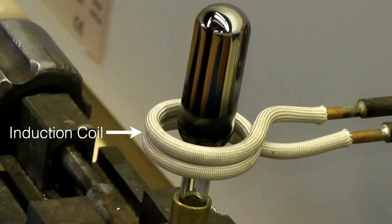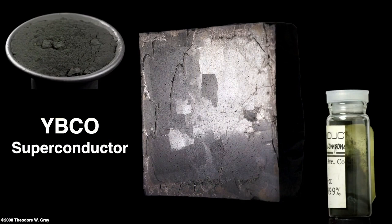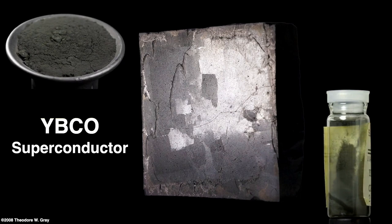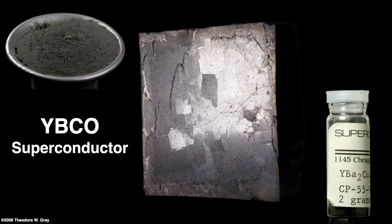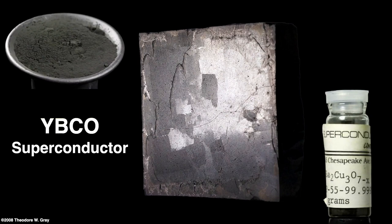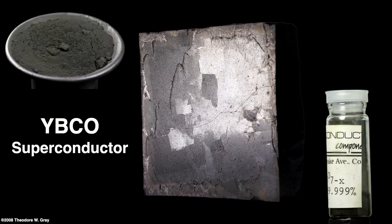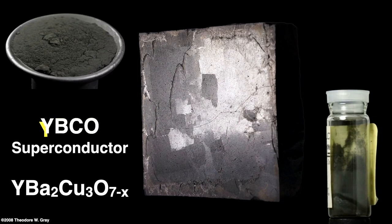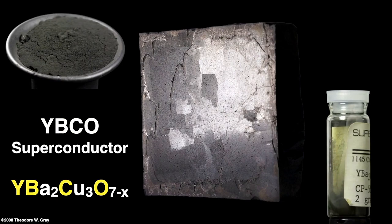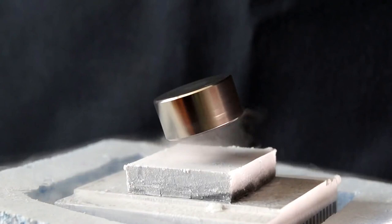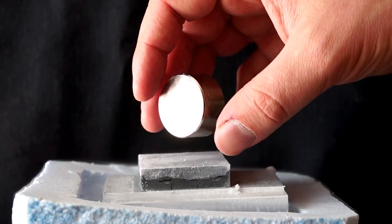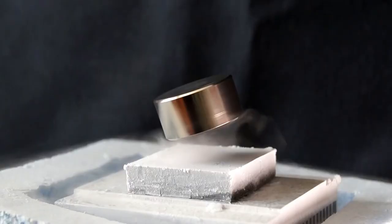YBCO was the first high-temperature superconductor that could be cooled with only liquid nitrogen rather than the more expensive liquid helium. It becomes a superconductor at minus 180.2 degrees Celsius. YBCO is shorthand for the chemical formula for yttrium barium copper oxide, with the letters Y, B, C, and O taken from that formula. Superconductors conduct electricity without resistance. Here, a magnet placed on top of the cooled superconductor generates an opposing magnetic field that rejects the magnet's field, leaving it floating above — this is called flux pinning.